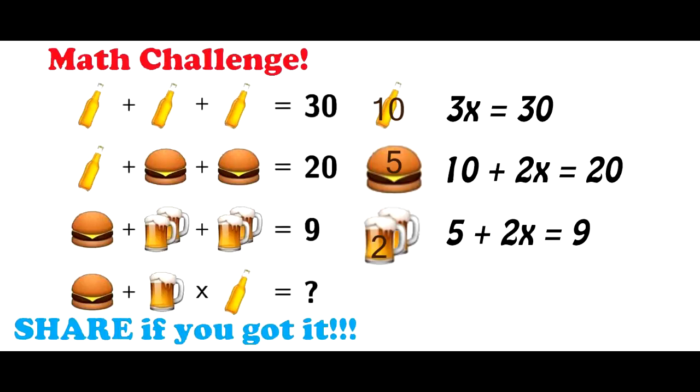So now we have all the information we need to solve the final equation. You just basically throw in some values. You get five plus one times ten.